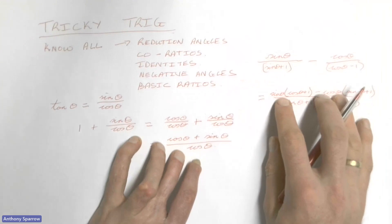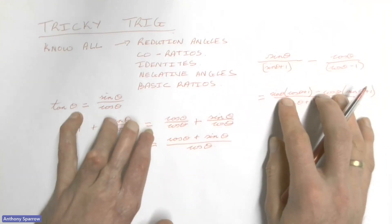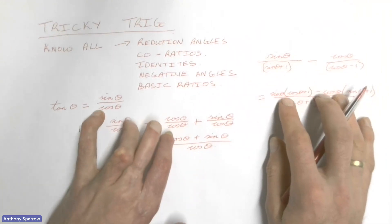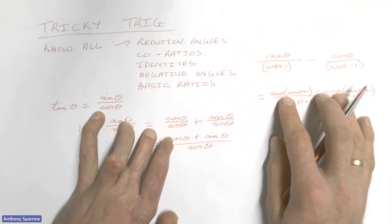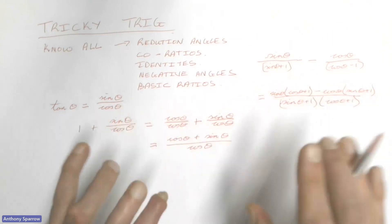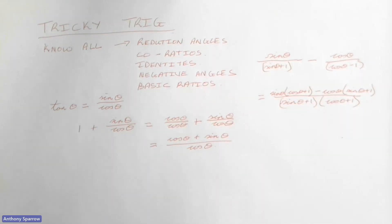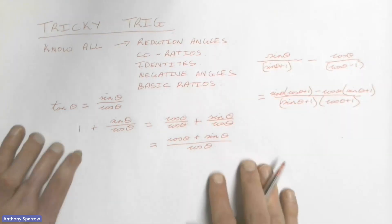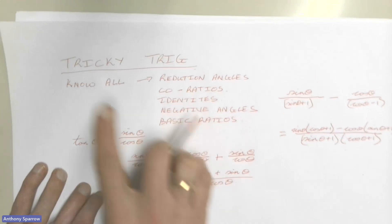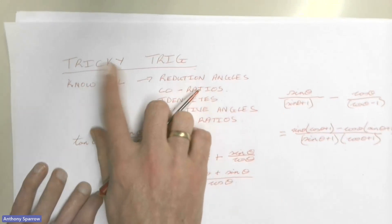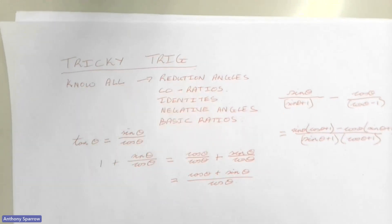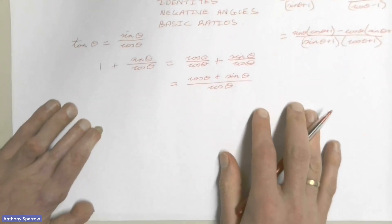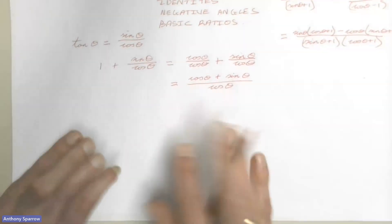Being able to combine fractions is very important, especially if you're changing tan θ into sin θ over cos θ. All of that is really important for your identities — if you don't know how to do that you're going to be stuck with some really tricky trig.